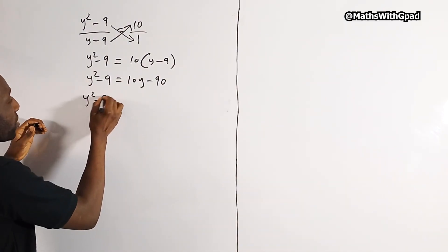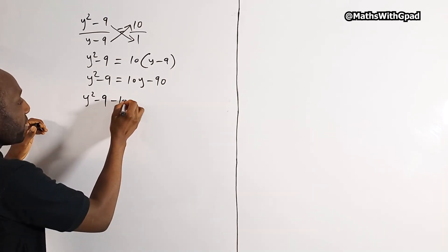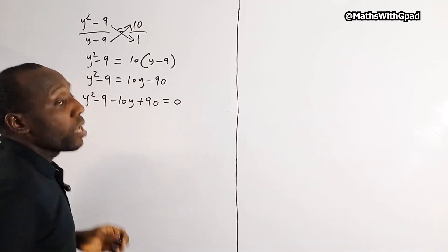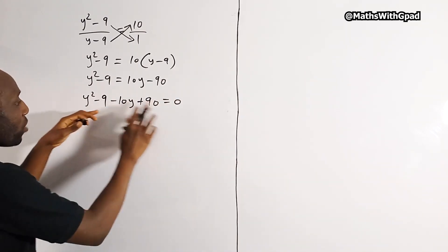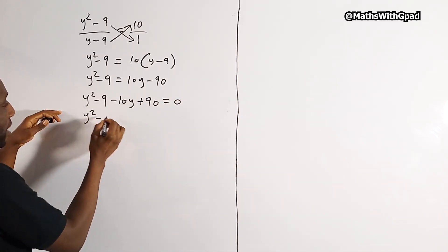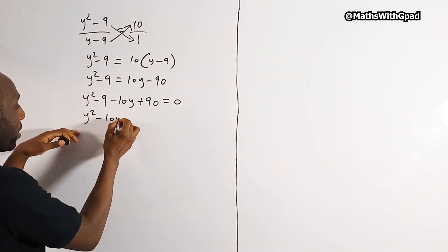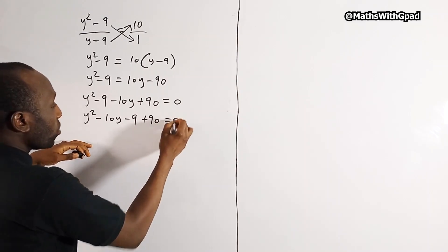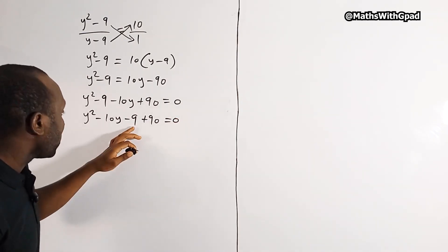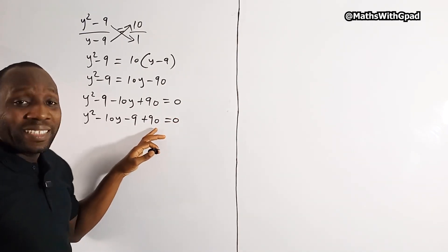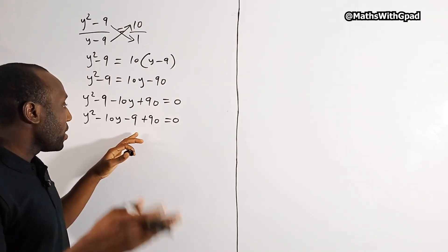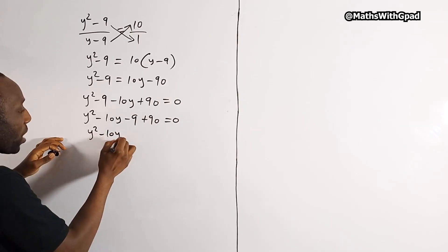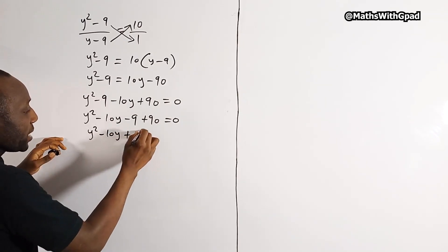So we have y squared minus 9 minus 10y plus 90 all equal to 0. Rearranging, we get y squared minus 10y, and then negative 9 plus 90 is 81. So that gives us y squared minus 10y plus 81 equals 0.